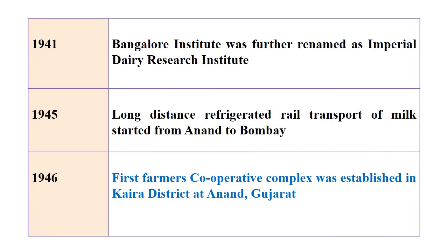In 1941, the Bangalore Institute for Dairy Education was further renamed the Imperial Dairy Research Institute — this is the mother of the present-day National Dairy Research Institute in Karnal. In 1940, for the first time, long-distance refrigerated rail transport of milk started from Anand to Bombay. Anand is a place in Gujarat with more dairy development and higher milk production, so milk was transported to Bombay through refrigerated rail. In 1946, the first farmers' cooperative complex was established in Kaira district at Anand — Anand being the district headquarters in Gujarat where the first farmers' cooperative was established.